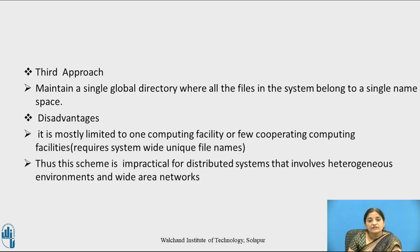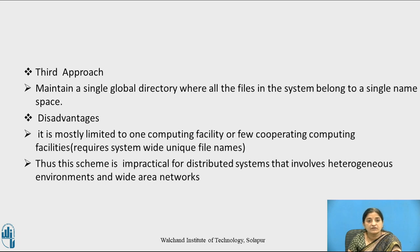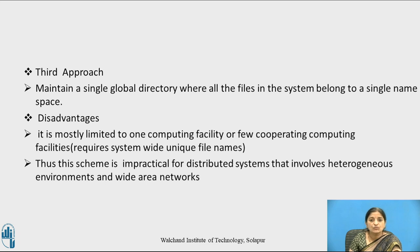The third approach maintains a single global directory where all the files in the system belong to a single namespace. It is like maintaining a single global directory where we combine all the namespaces of every file server and view it as one logical space. The disadvantage is that it is mostly limited to one computing facility or a few cooperating facilities, as this requires system-wide unique file names to be generated. This scheme is impractical for distributed systems involving heterogeneous environments and wide area networks, because one naming convention suitable for one facility may not be suitable for another.